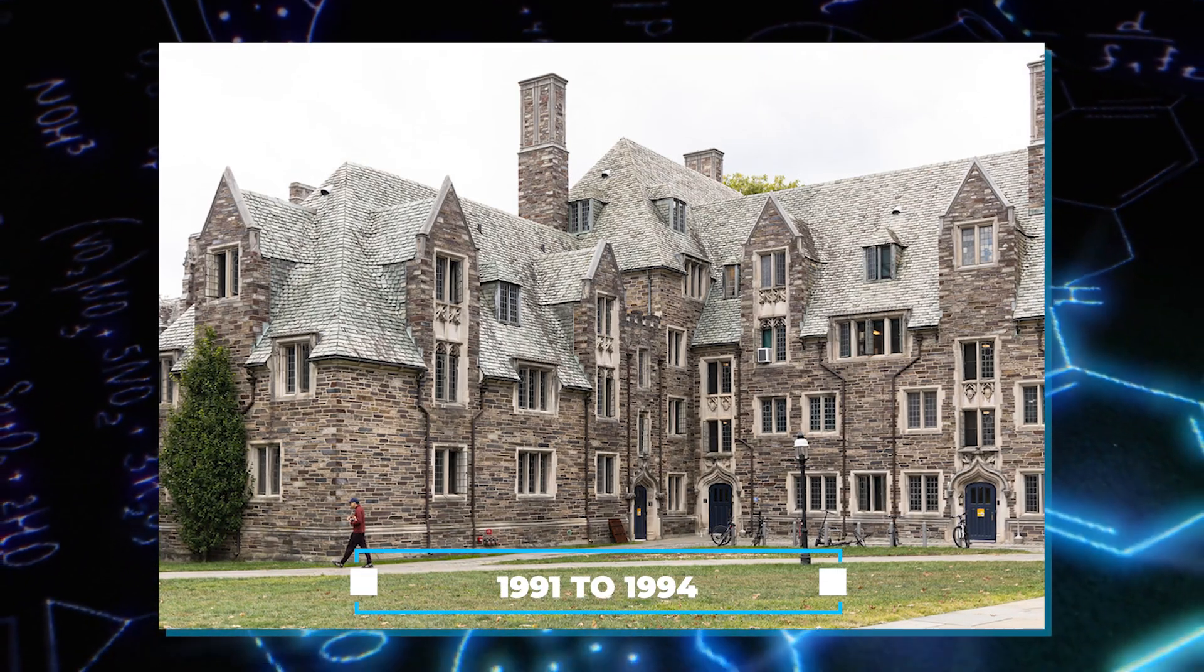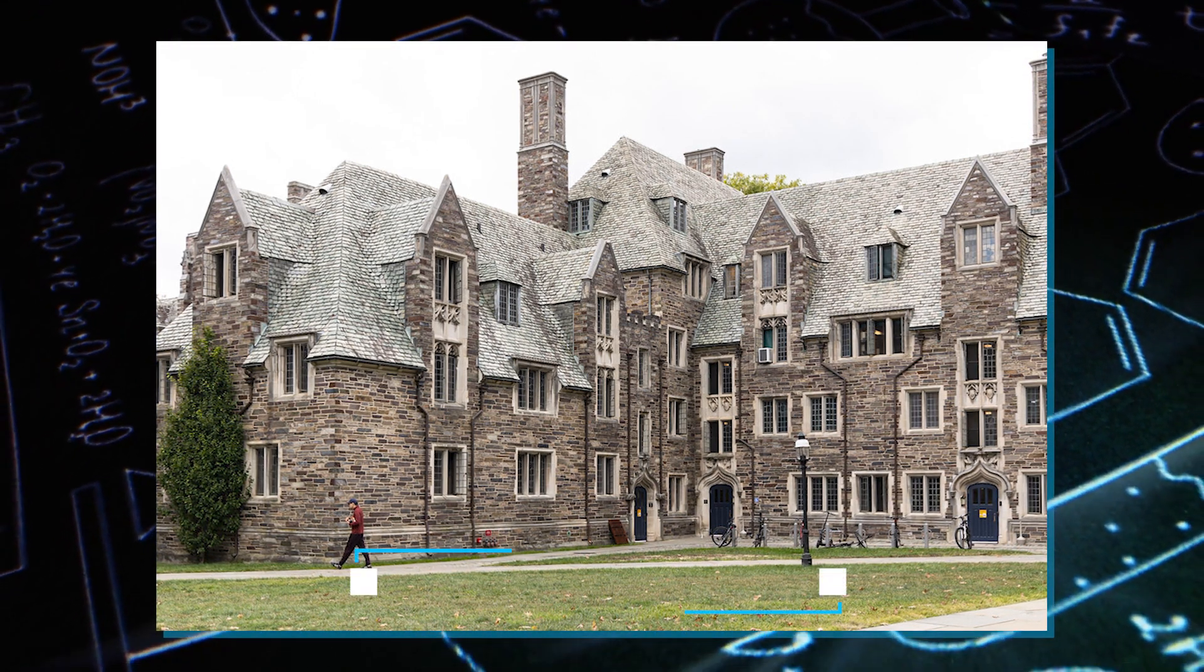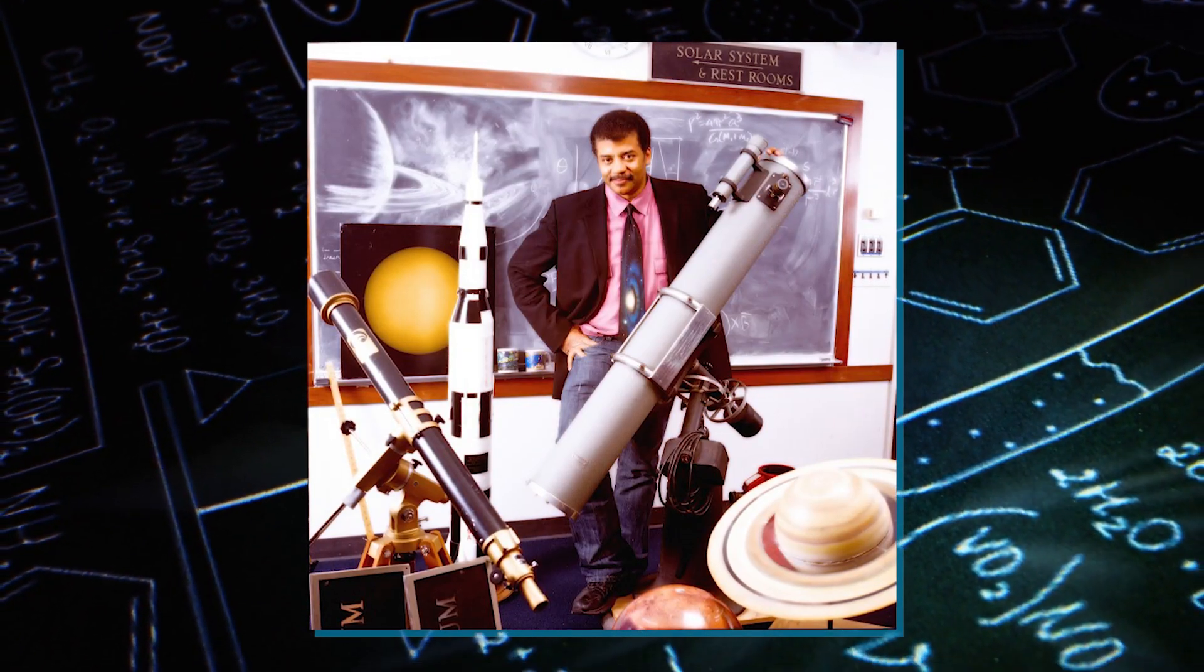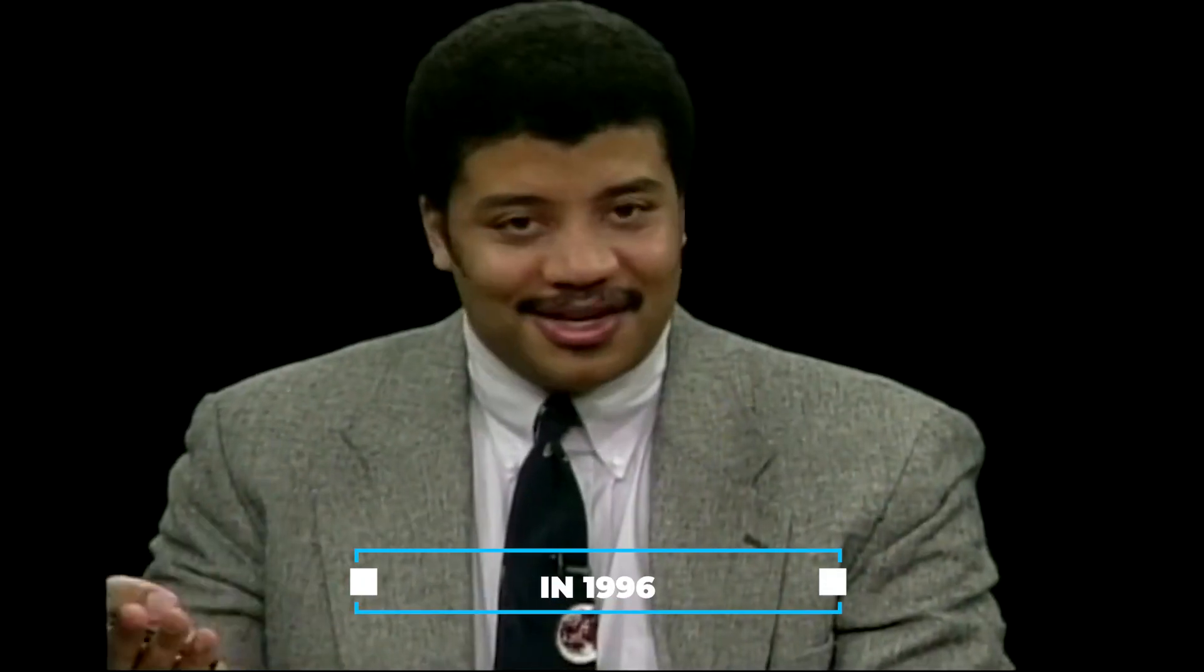From 1991 to 1994, Tyson served as a post-doctoral research associate at Princeton University. Subsequently, he joined the Hayden Planetarium as a staff scientist and the Princeton faculty as a visiting research scientist and lecturer. In 1996, Tyson assumed the role of director at the Planetarium, overseeing its $210 million reconstruction project completed in 2000.